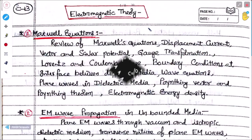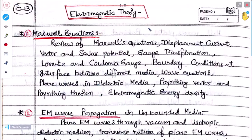Electromagnetic theory in semester 6 contains two parts. The first part covers electromagnetism — Maxwell's equations and their applications. The second part covers polarization, that is, optics, polarization of light, and their applications.